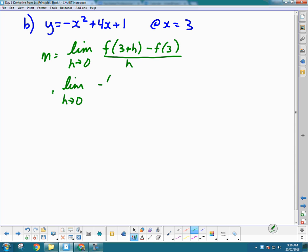Plugging in 3 plus h is going to be more complicated because the function itself is more complicated. So it's negative bracket x squared, so 3 plus h squared, plus 4 times x, so 4 times 3 plus h, plus 1.